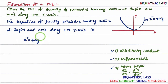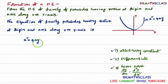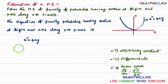In this curve x² = 4ay, how many arbitrary constants are there? Only one arbitrary constant is there — that is 'a'. Do not think that 4 is an arbitrary constant; 4 is a fixed constant. Only one arbitrary constant is there, which is 'a'. So, as there is one arbitrary constant, we can differentiate this only one time.